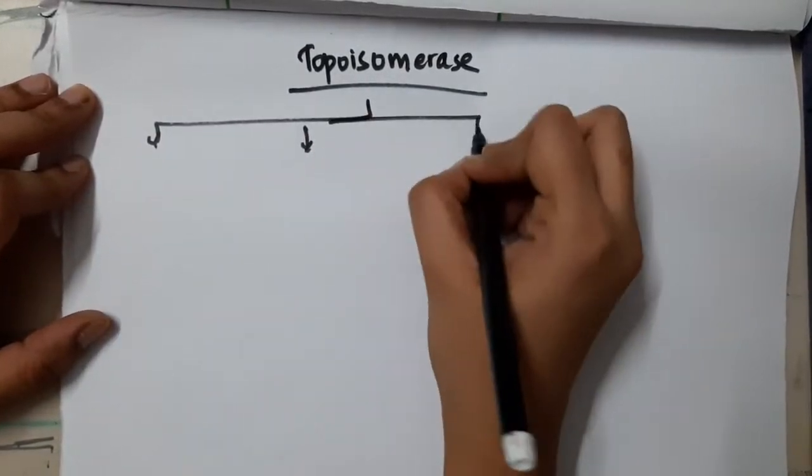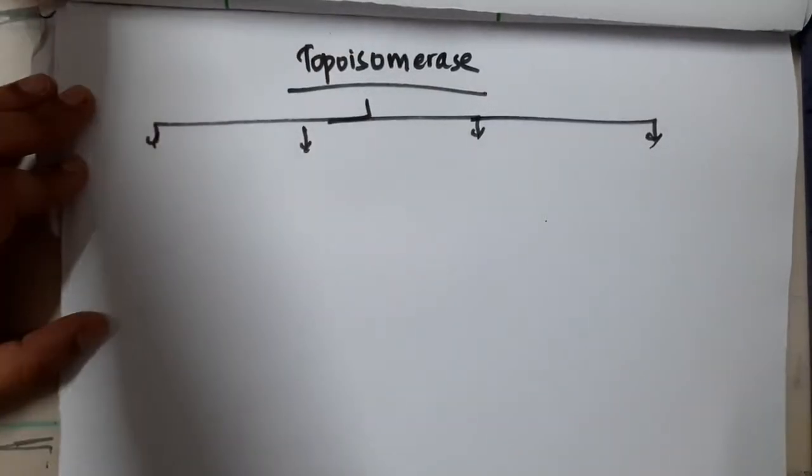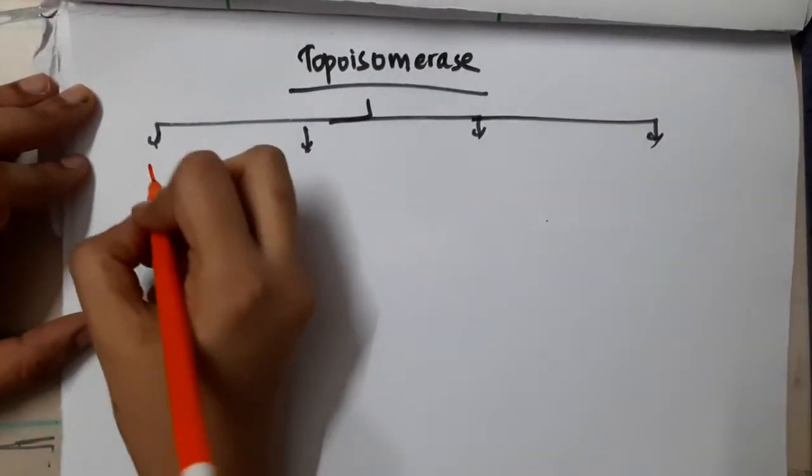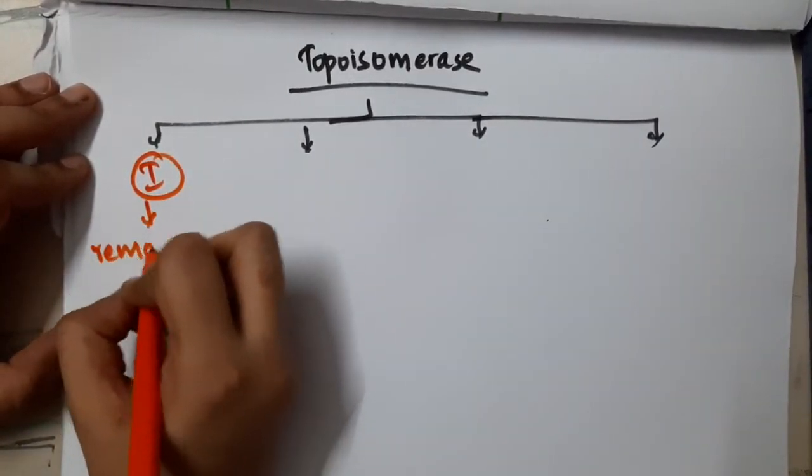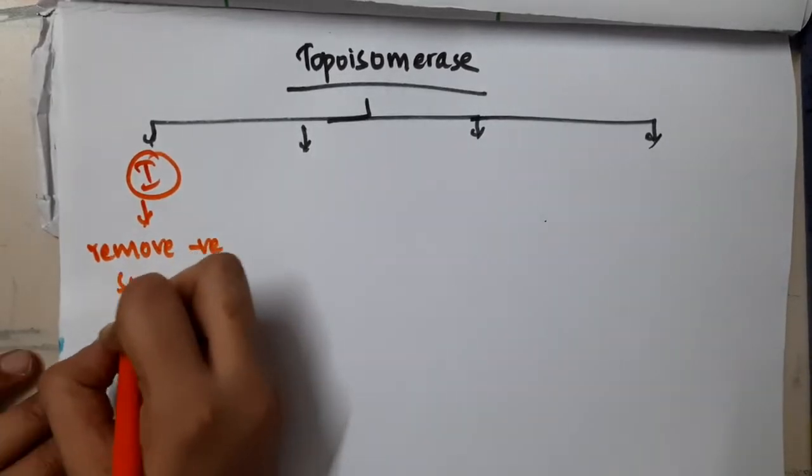Topoisomerase can be divided into 4 types. We have topoisomerase 1, which removes negative supercoiling.